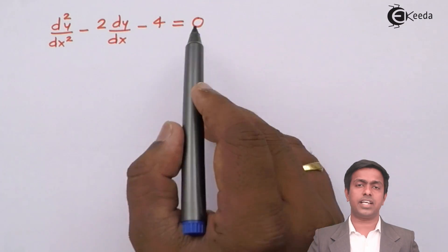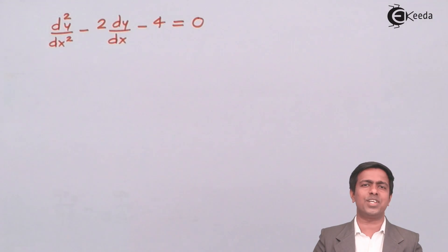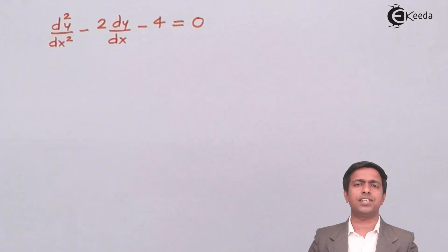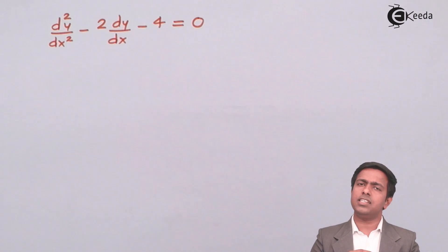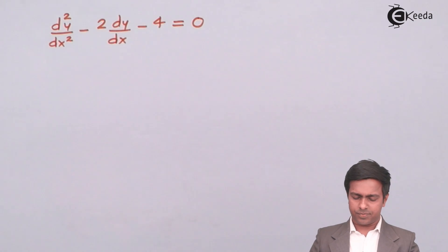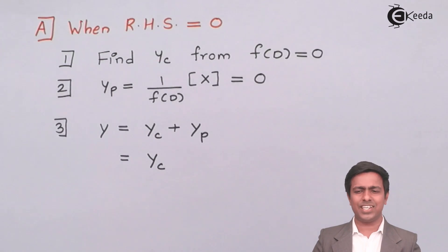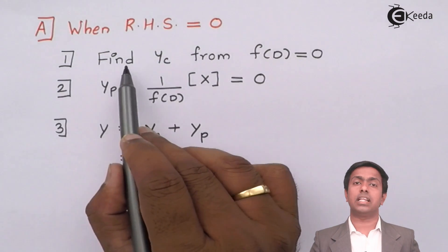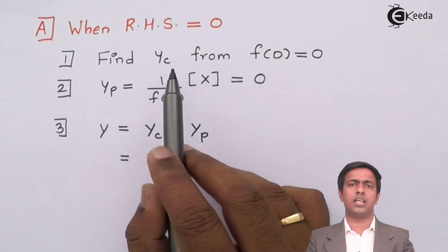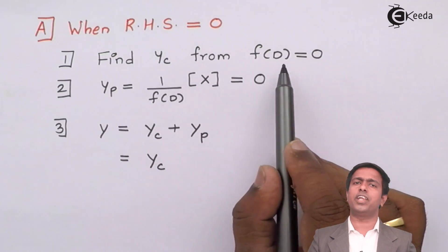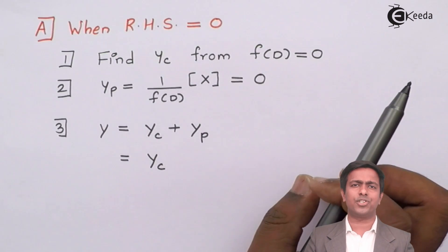Here the right-hand side is 0. The question is how to find the solution of such an equation which has right-hand side as 0. Before starting the answer, I am going to tell you a few steps, and you just have to follow those steps to get the answer. Whenever your right-hand side is 0, you first have to find out yc, which is nothing but the complementary function, and you find yc from f(D) = 0, which is nothing but the auxiliary equation.